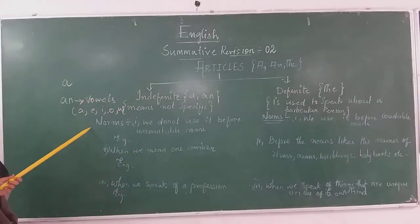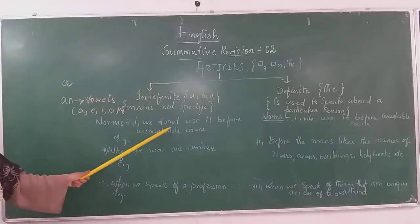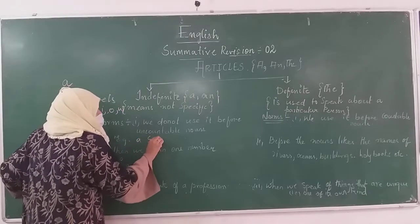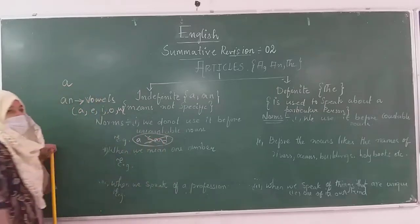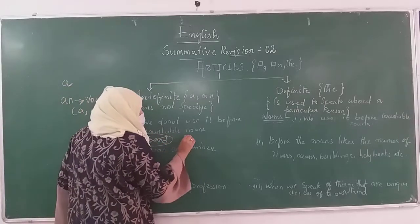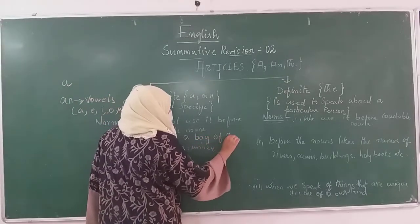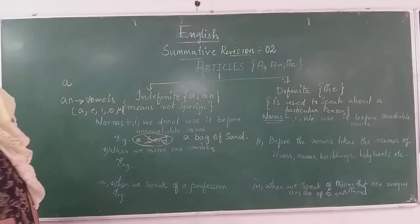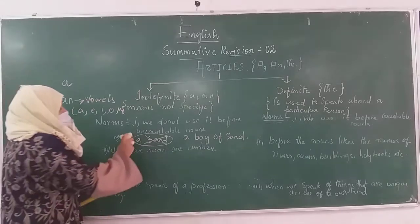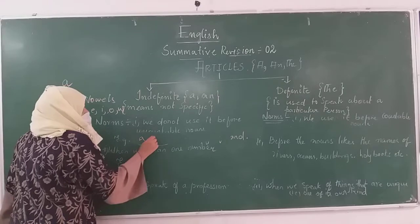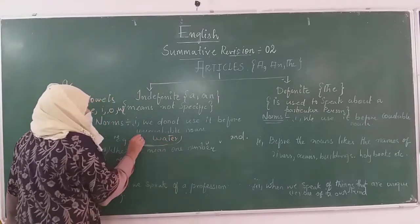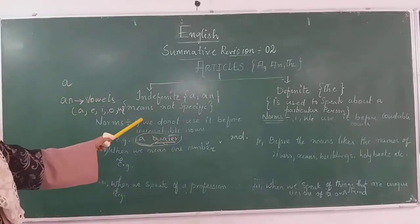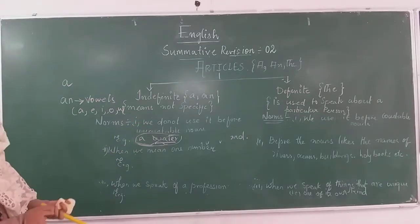A is used before consonants and AN is used before vowels. Now, a key rule: we do not use the indefinite article before uncountable nouns. For example, we do not write 'A SAND' — this is wrong. Instead, we write 'A BAG OF SAND.' Similarly, we do not write 'A WATER' — this is wrong, because water is an uncountable noun and we cannot use A or AN before uncountable nouns. Instead, we write 'A GLASS OF WATER.'